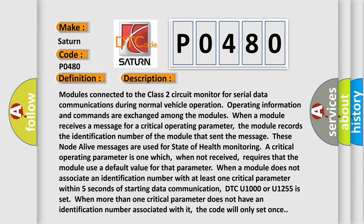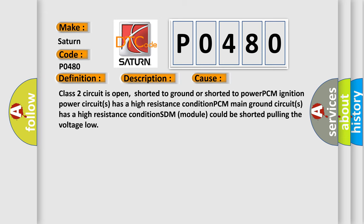This diagnostic error occurs most often in these cases. Class 2 circuit is open, shorted to ground or shorted to power. PCM ignition power circuit has a high resistance condition. PCM main ground circuit has a high resistance condition. SDM module could be shorted pulling the voltage low.